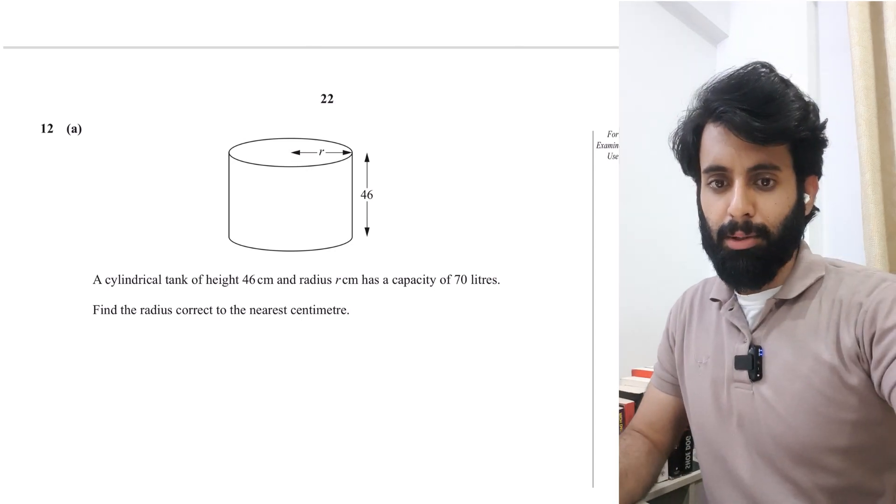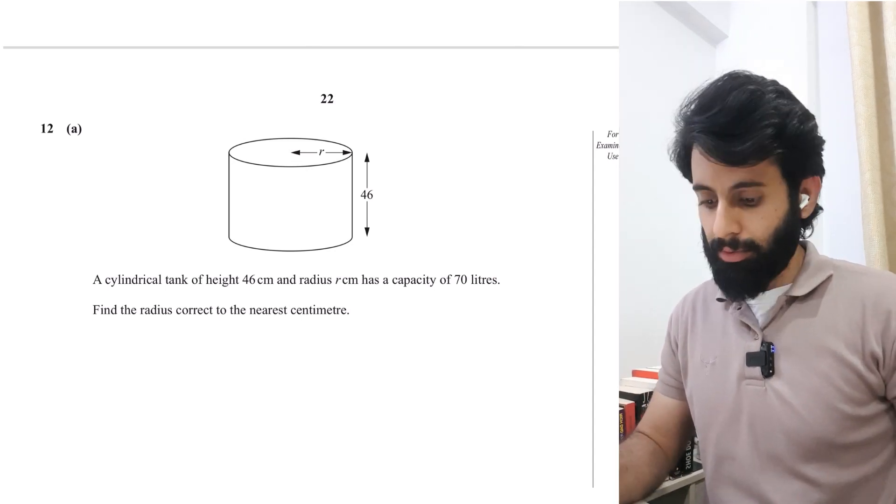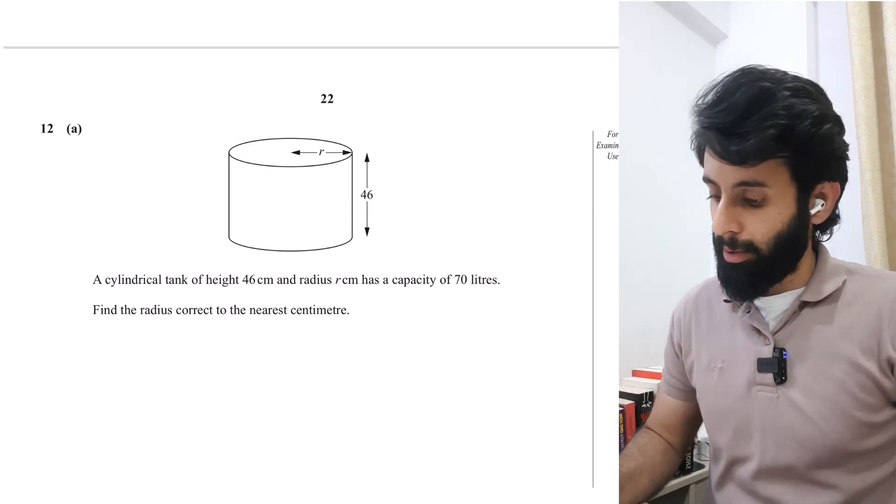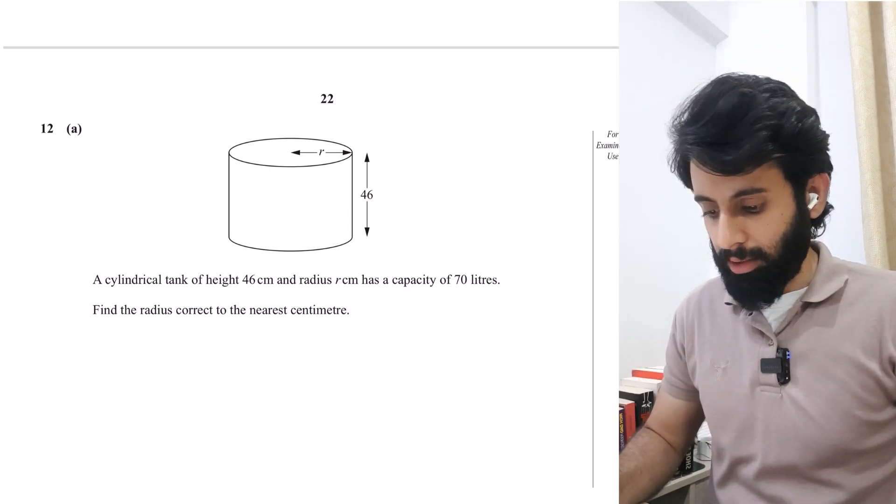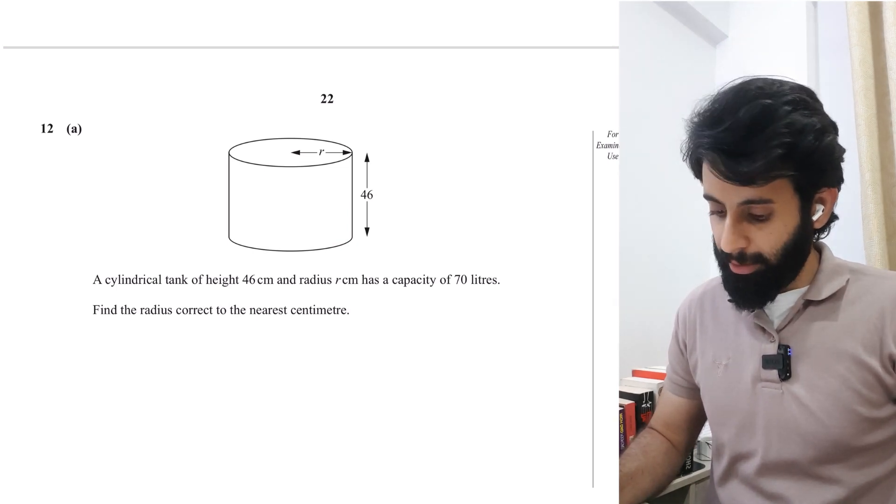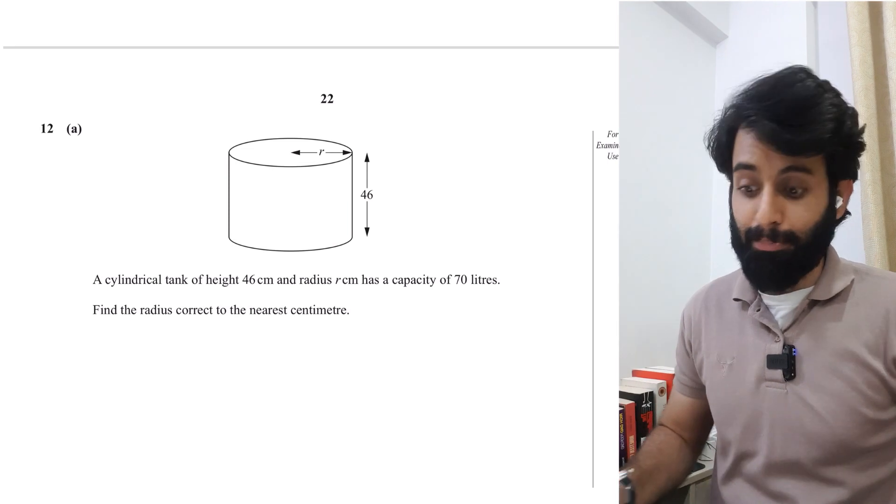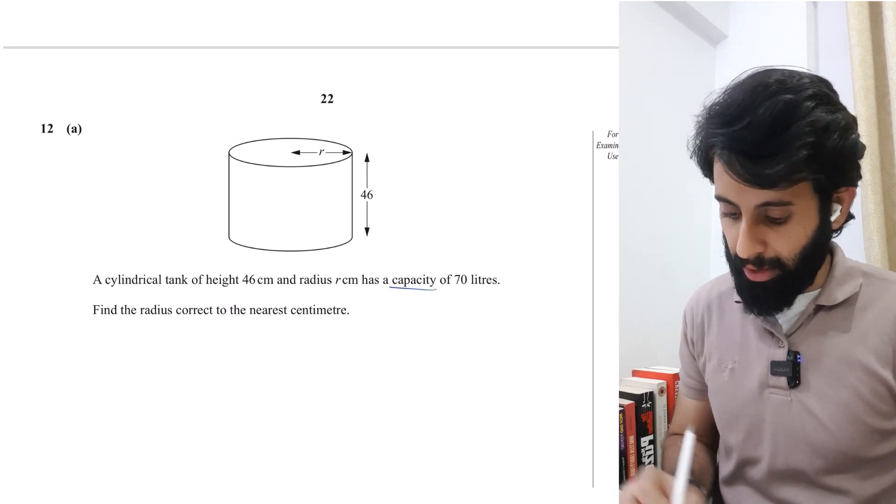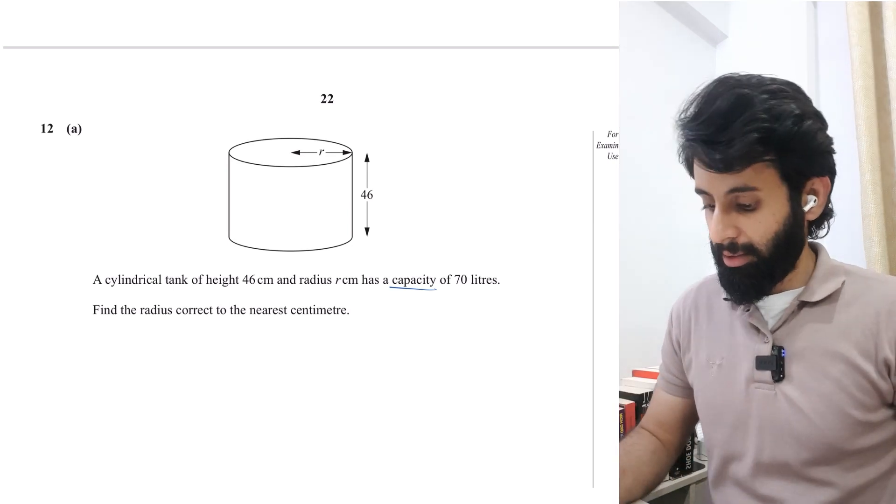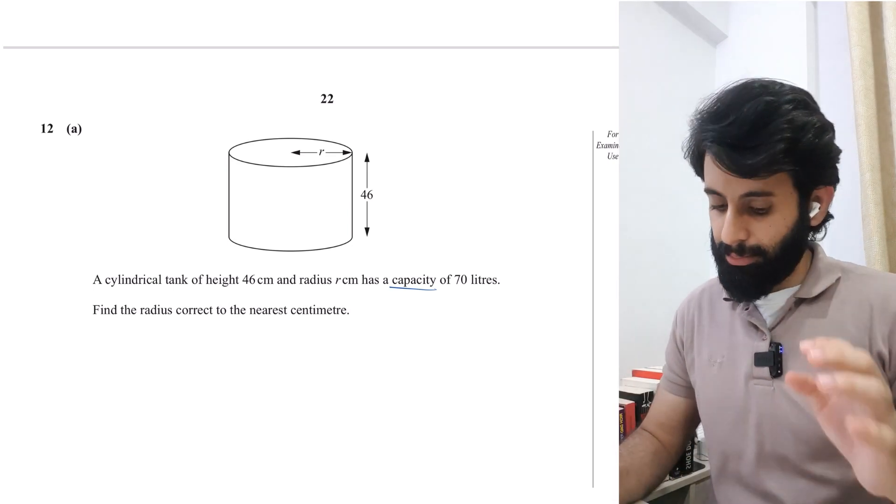Alright, so in this video I'm going to be solving another mensuration question for you guys. This is from May/June 2013 Paper 2 Variant 2. Let's get started. It says a cylindrical tank of height 46 centimeters and radius r centimeters has a capacity of 70 liters.